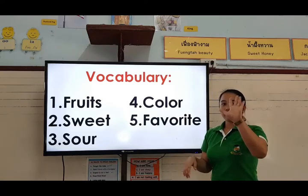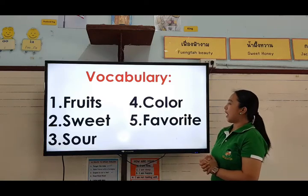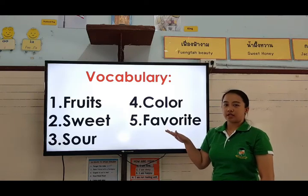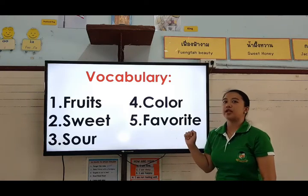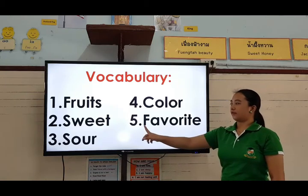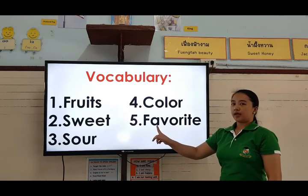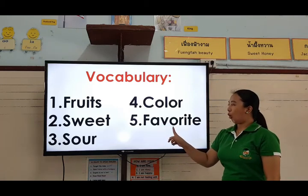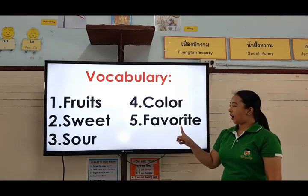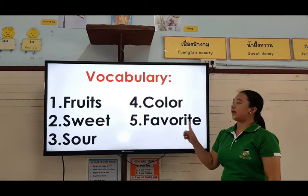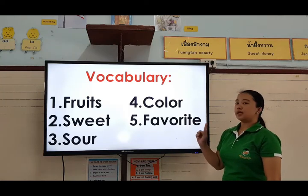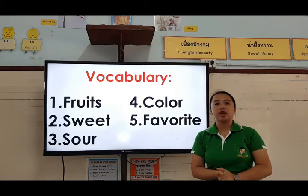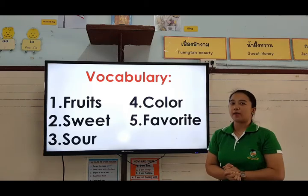Color. And the fifth and last one, we have the word favorite. Let's spell the word favorite: F-A-V-O-R-I-T-E. Favorite. Again, let's read the five vocabularies one by one.